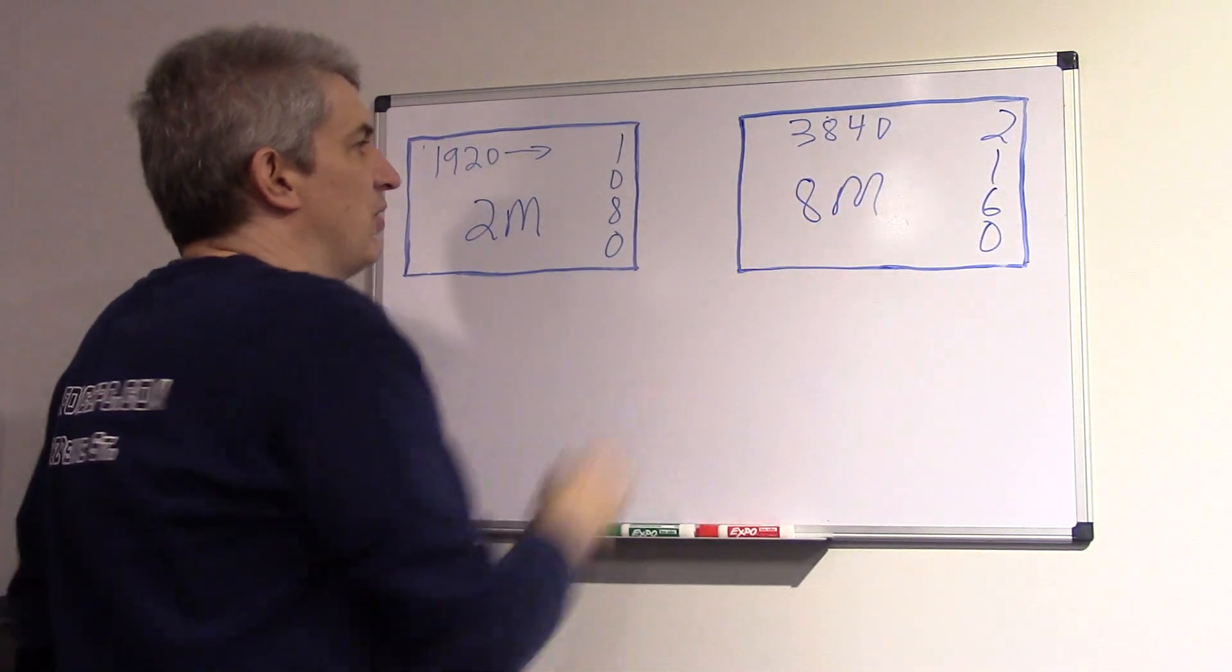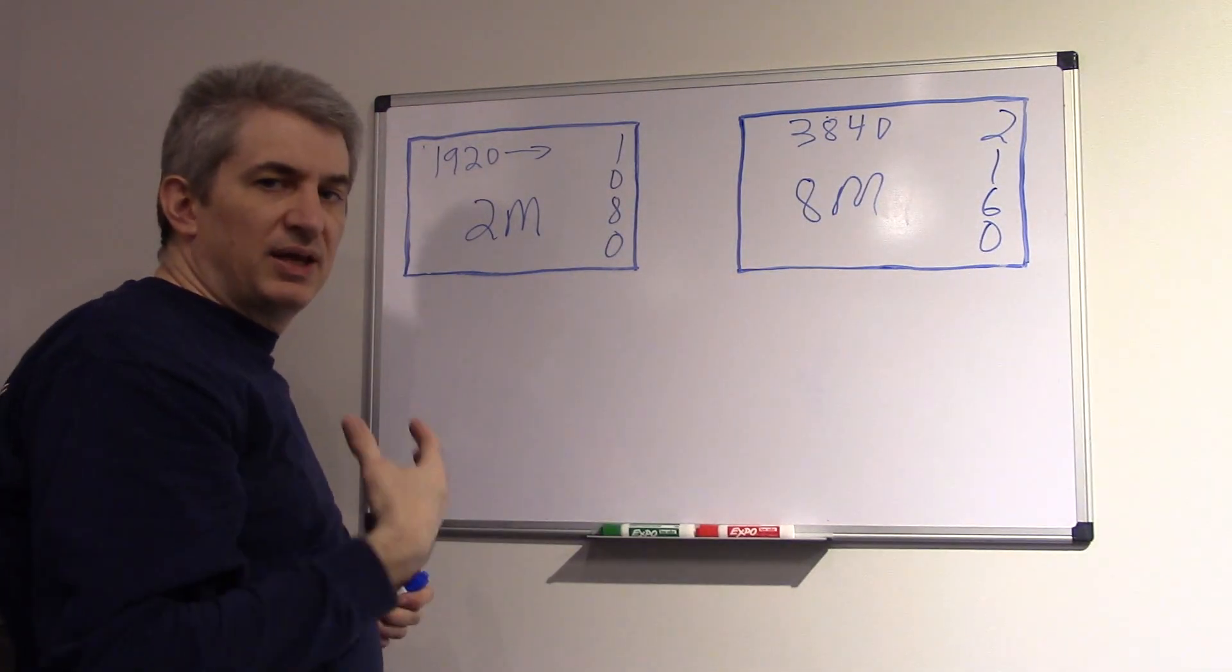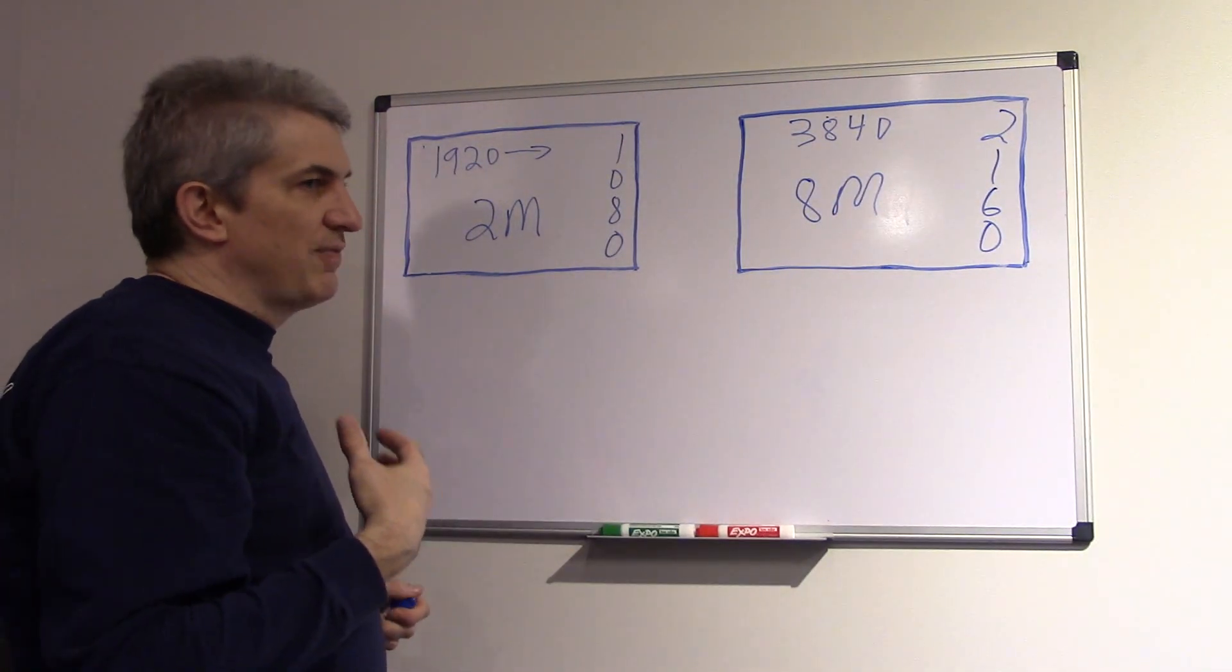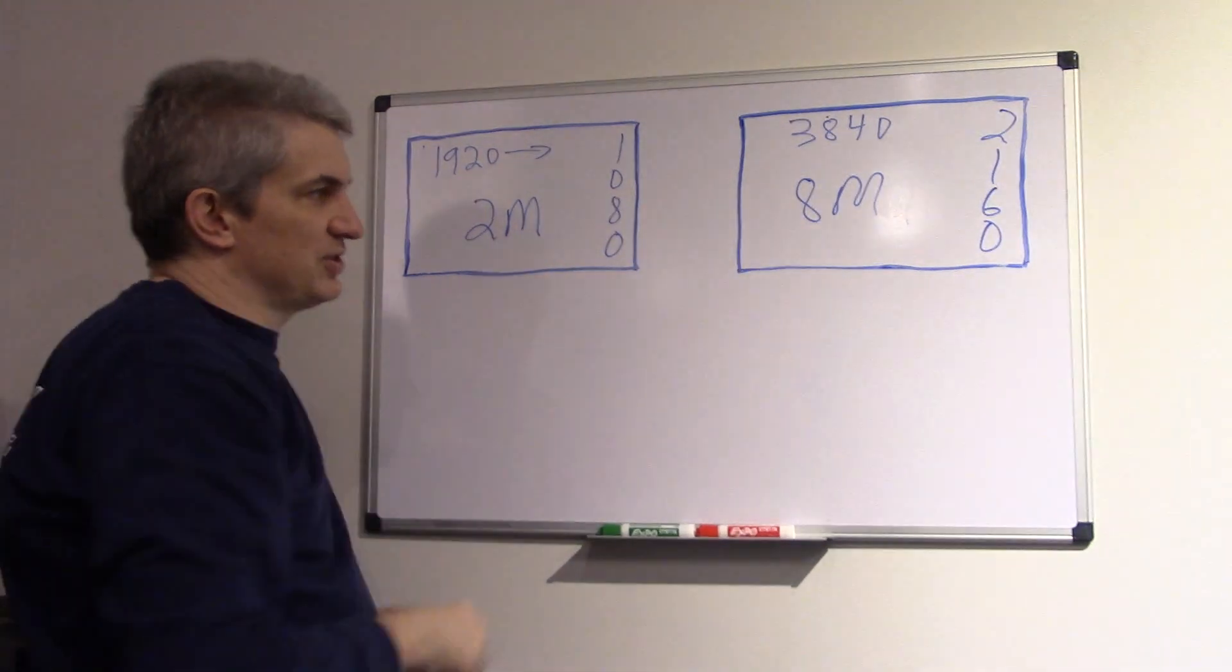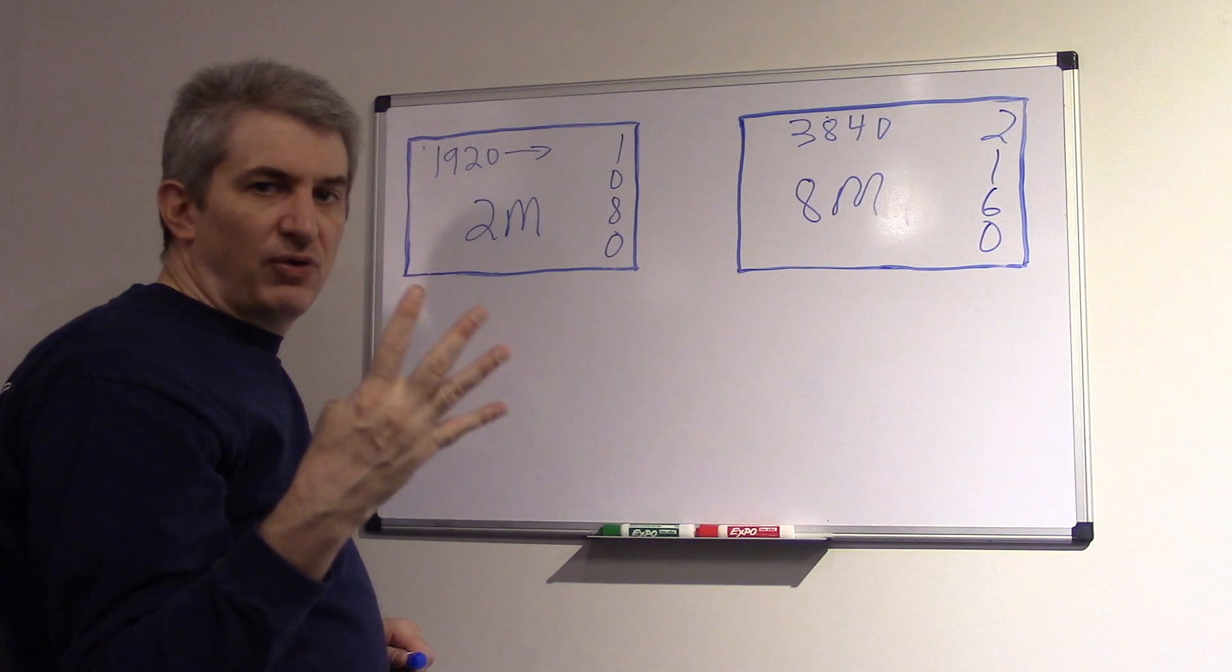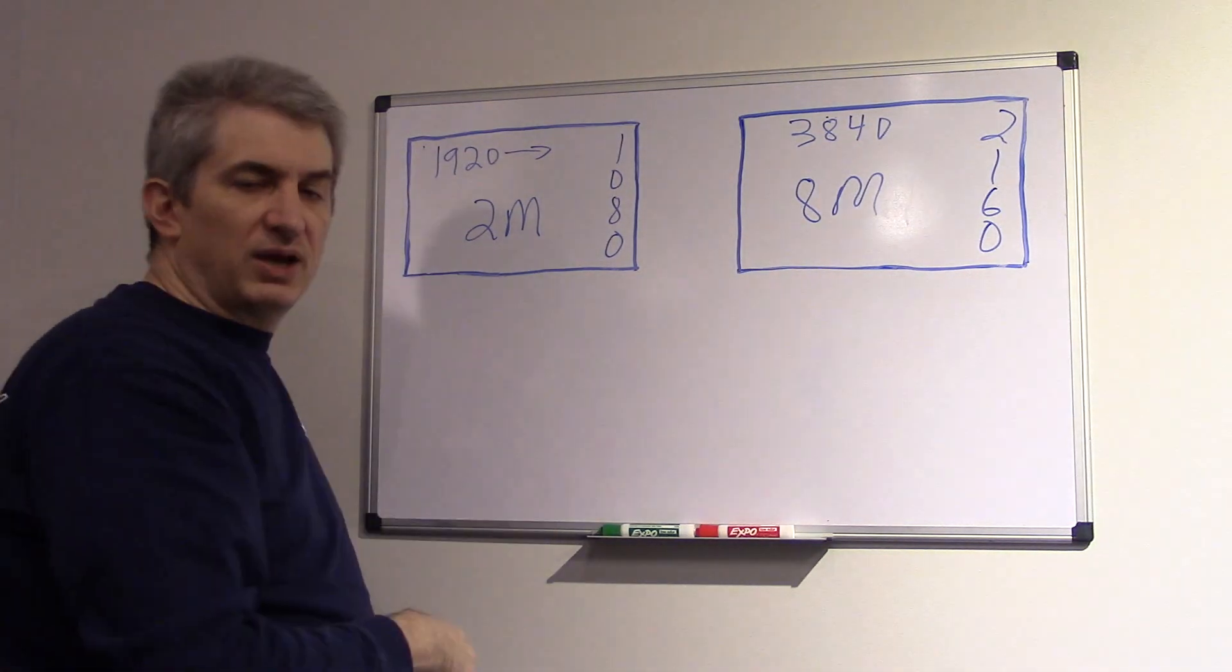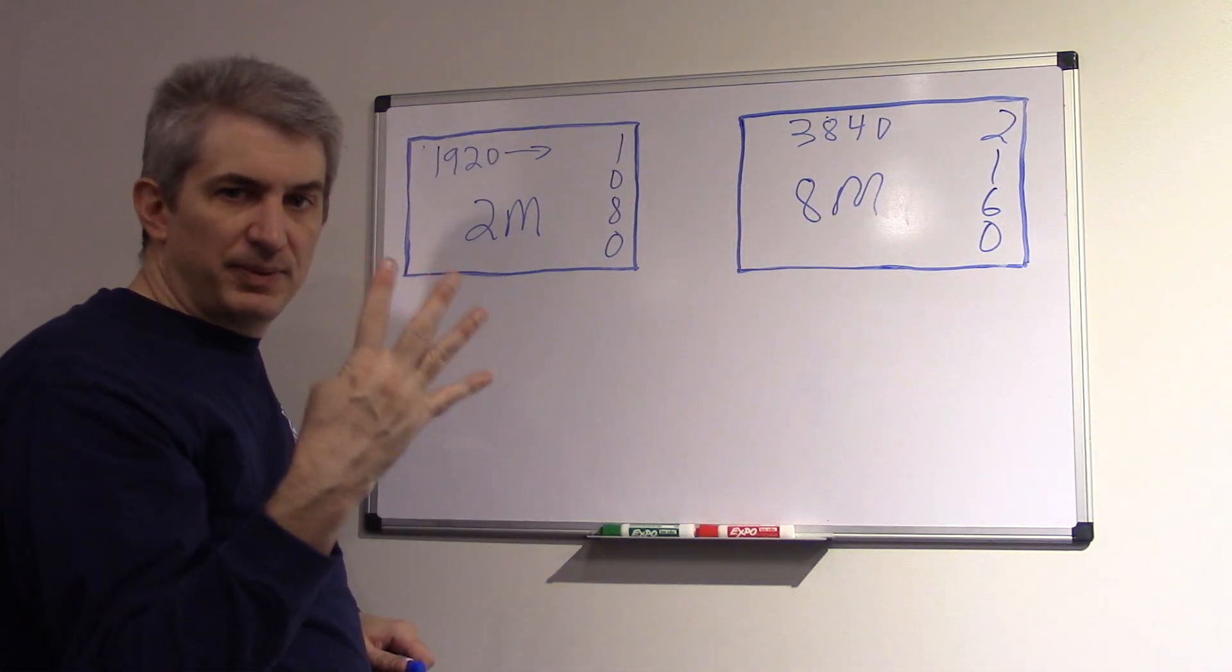So it is four times harder. If I'm a computer guy, what I'm thinking about is, if I'm gaming on this monitor versus this one, or this TV versus this one, it's four times harder to do it at 4K because there's four times the number of pixels to draw.